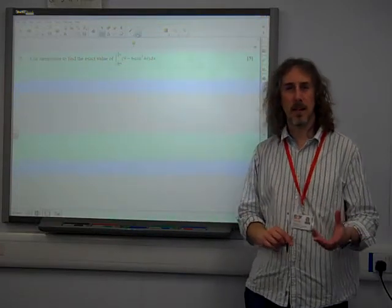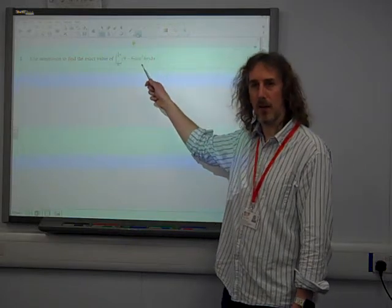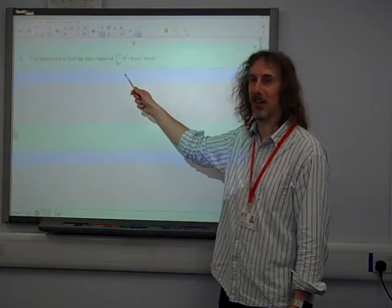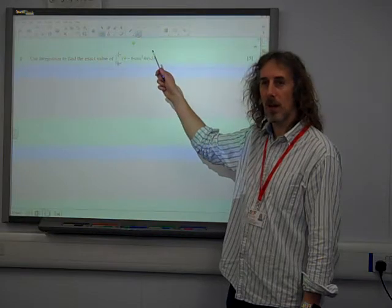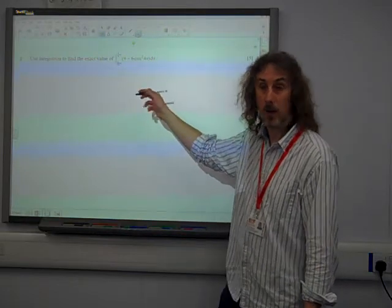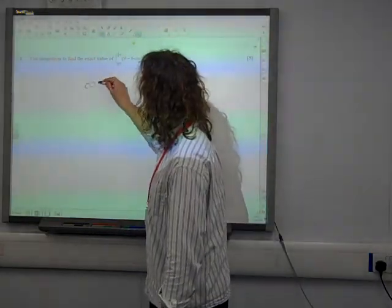So we need to think about 6 cos squared 4x first. Is it okay lined up? Good. So let's work our way through that. But we know that cos squared, well, hang on, remember how we get to this.